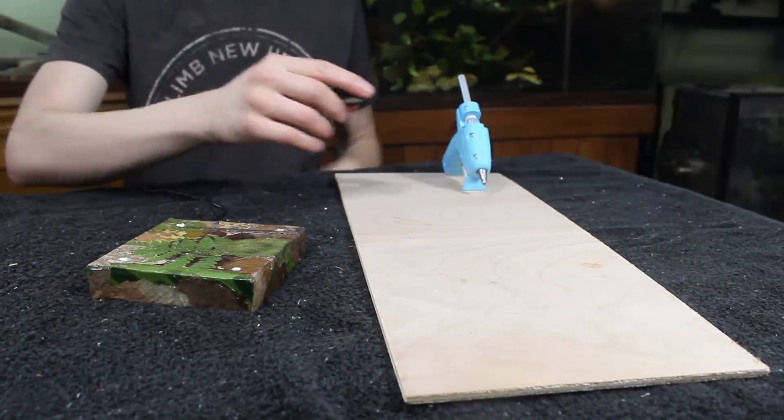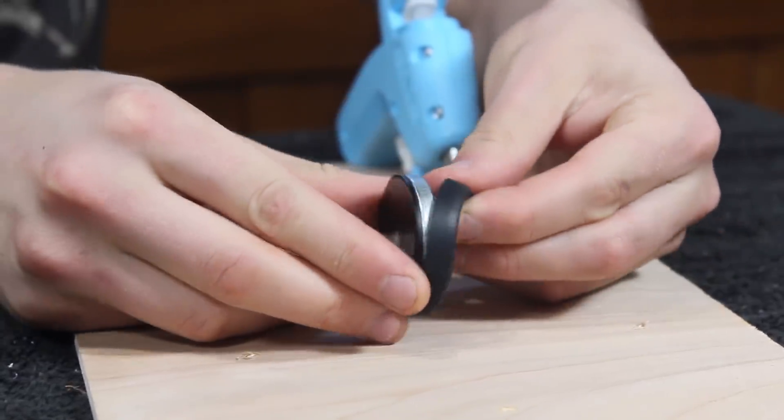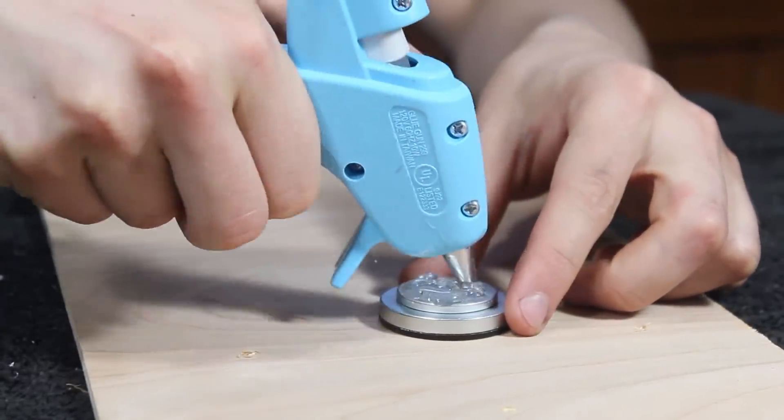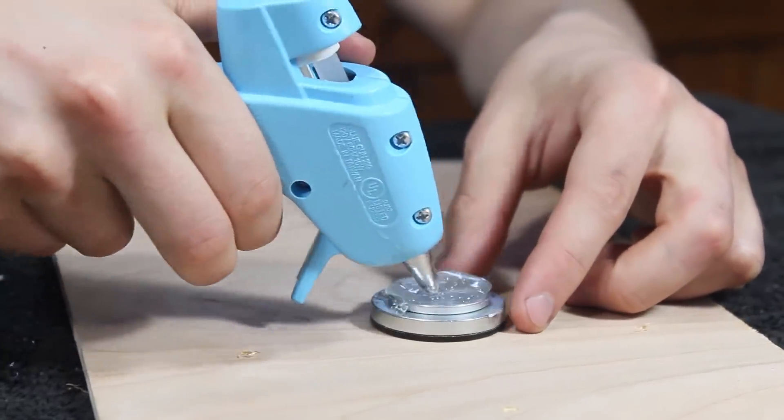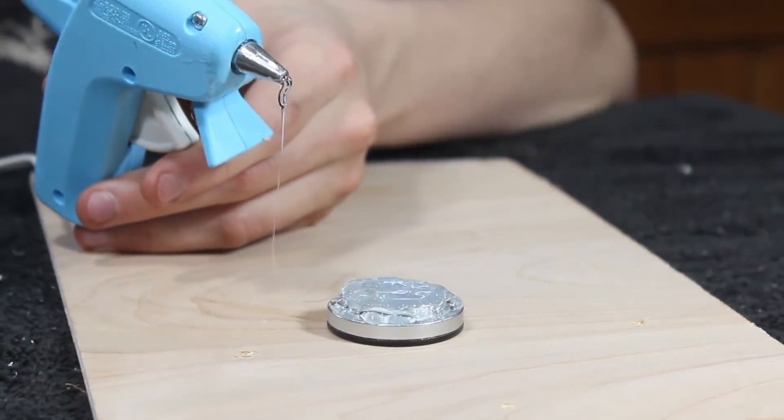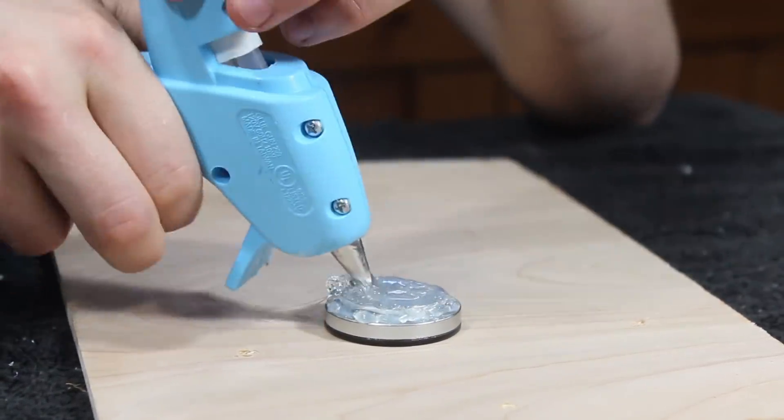To begin I removed the cover of the levitating magnet. Then I proceeded to thoroughly cover it in hot glue. Normally I would have done this with silicone but I didn't have time to wait for it to cure. So if you're going to do this, I highly recommend concealing the magnet in silicone.